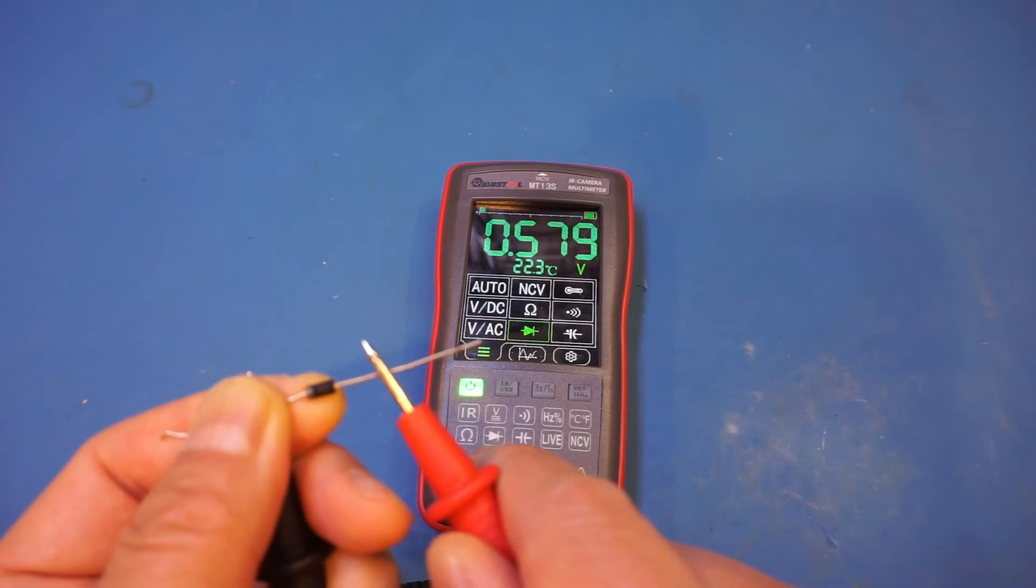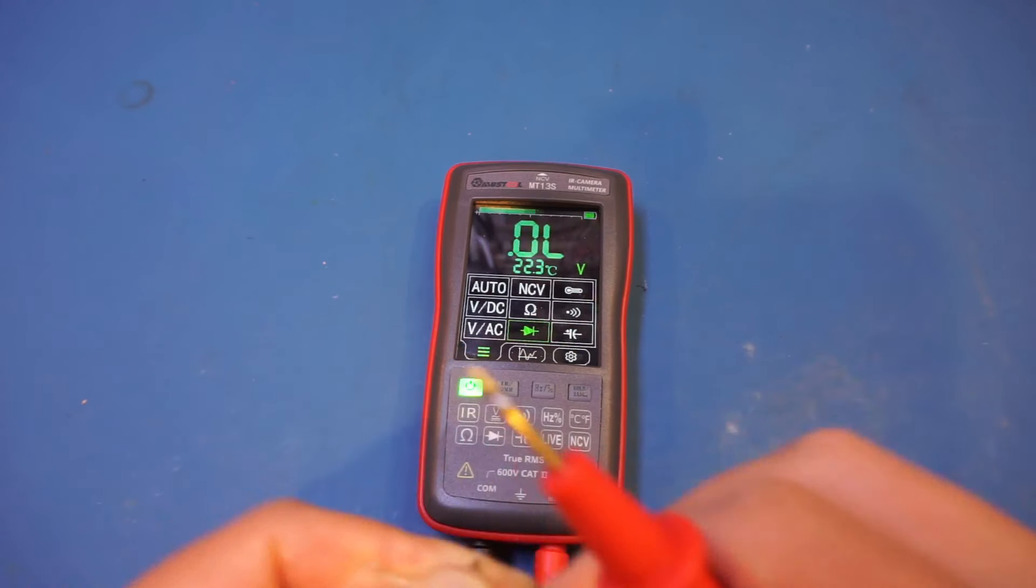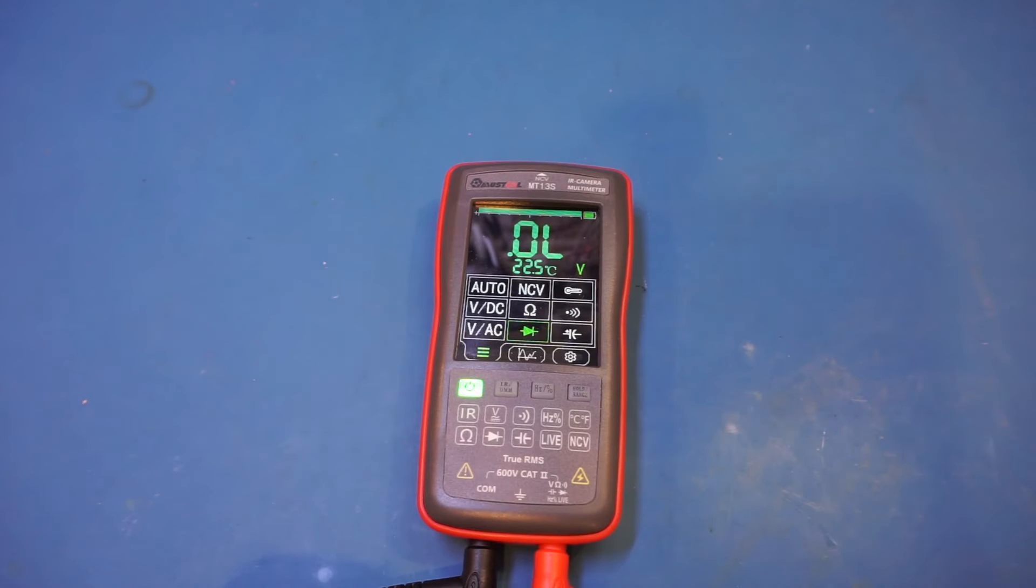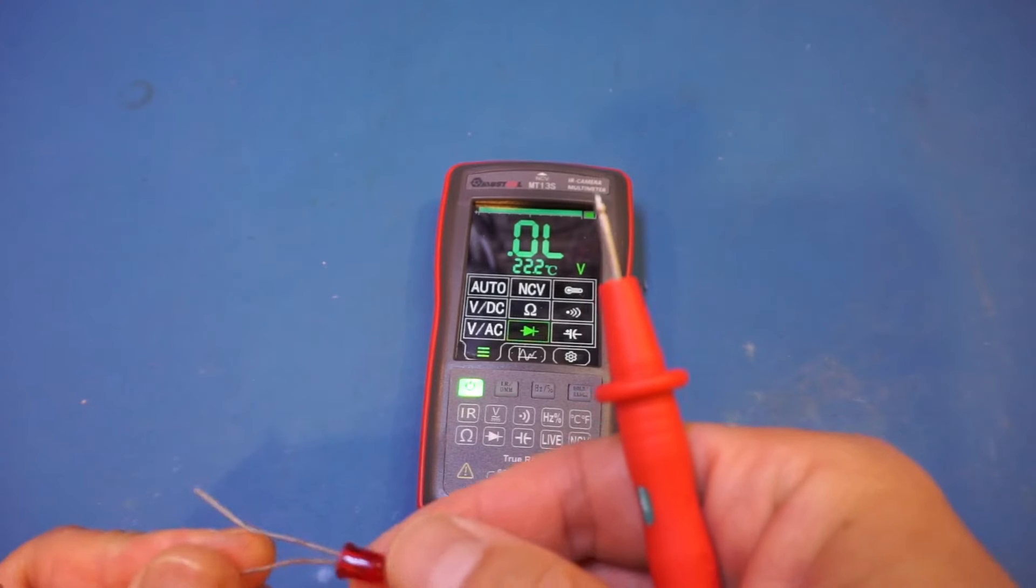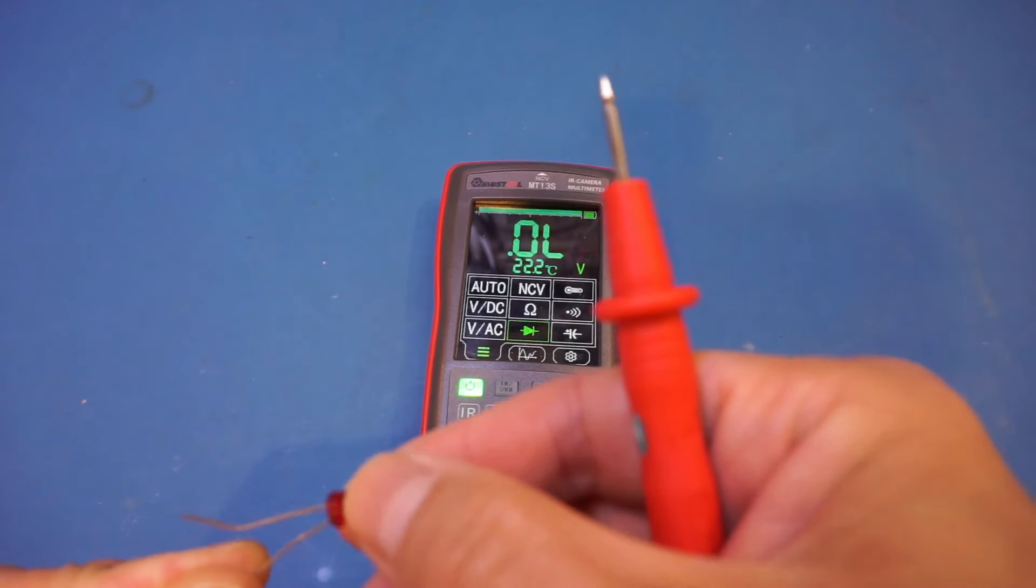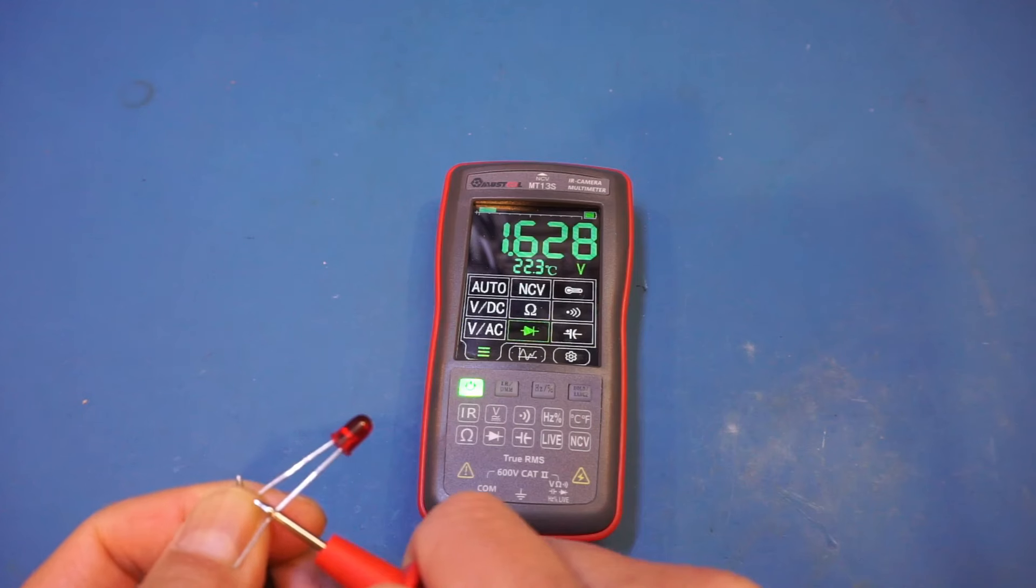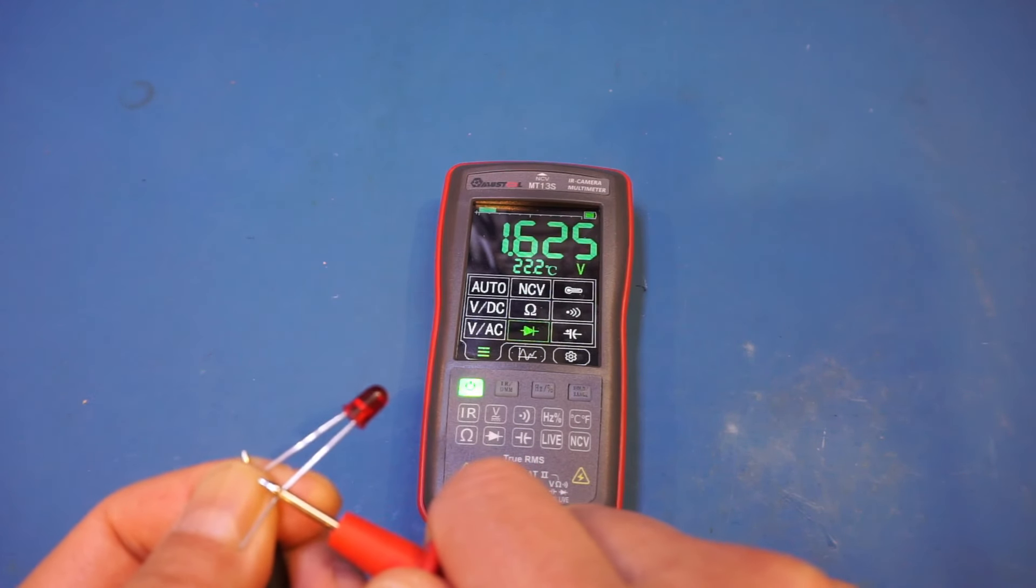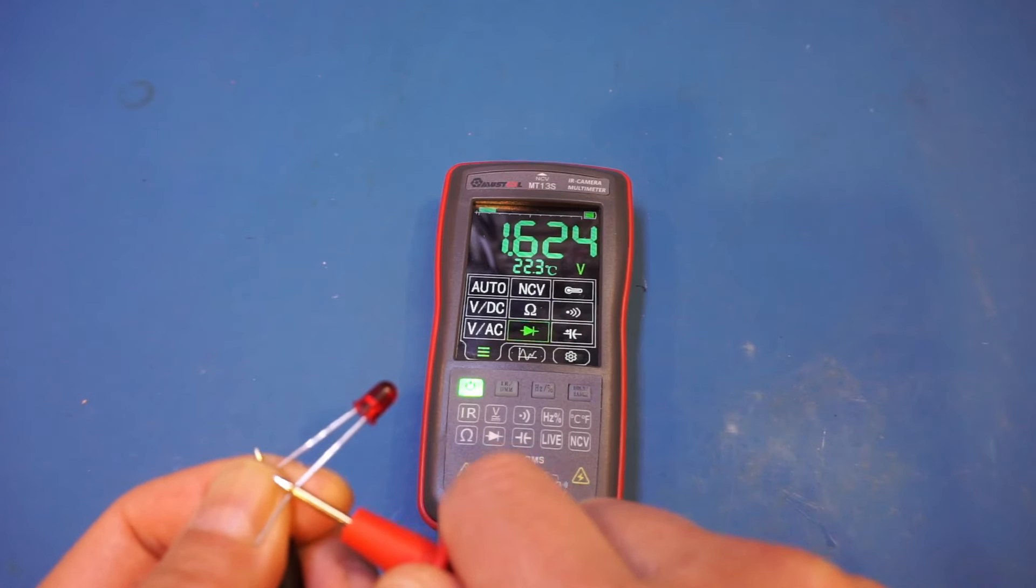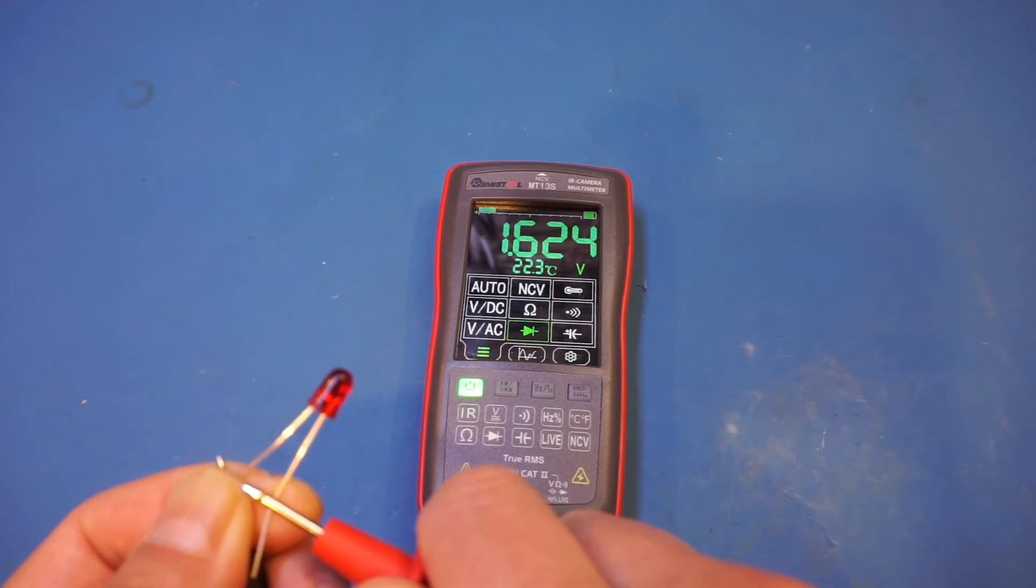And you can see we have no problem measuring the forward voltage drop. So let's swap it out with a red LED. And let's see, I can't really see from this end which side it's which. Let's try it out first. Yeah. So you can see that we are able to measure the forward voltage drop of a red LED. And it's very fast. So that is good.